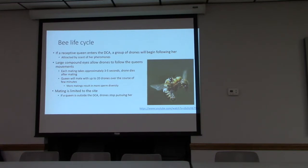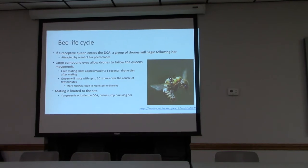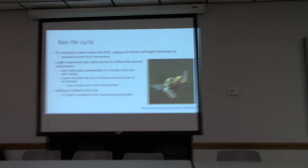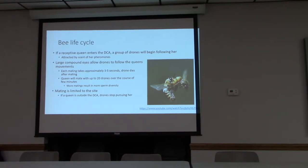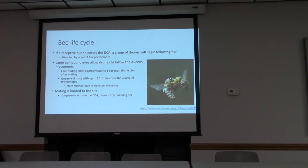A receptive queen enters the DCA and a group of drones follows, attracted by her pheromones. Drones have larger compound eyes, better for spotting the queen. Mating takes approximately three to five seconds, and the queen can mate with up to 20 drones over the course of a few minutes. Mating is limited to that location — once she flies out of the DCA, the drones won't follow. Researchers have studied this using slow-motion cameras and a queen tethered to a pole.